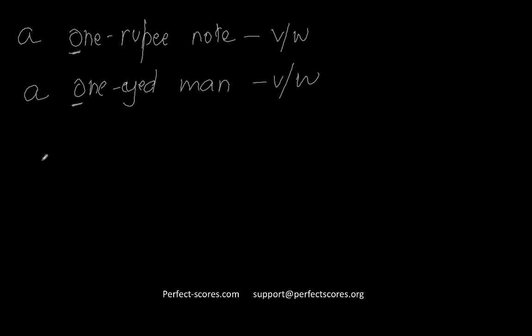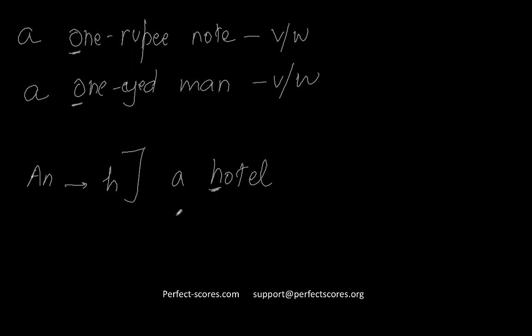There are some native speakers who use 'an' before words that begin with 'h' — for example, 'an hotel' — which is absolutely wrong. It should be 'a hotel' because the sound is of 'h'. Similarly, 'a historical book' — the sound is of a consonant 'h', so you put 'a' in front of it. That covers the indefinite articles. Now let's see in which cases you have to use the definite article.